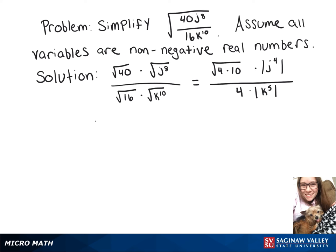And now the square root of 4 is 2, so we can take that out of the square root, and then we still have that 10 in there. That's times j to the 4th.